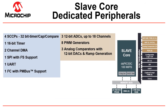In contrast, the slave core features some communication peripherals but is more equipped with high-speed A-to-Ds, more PWM generators, and analog comparators. This makes the slave core better for running tight, closed-loop feedback and control algorithms for motor control or digital power applications.